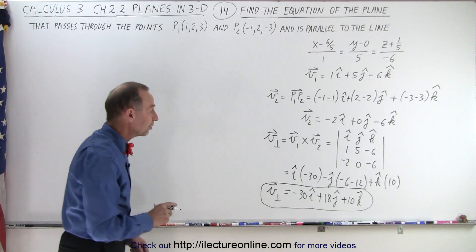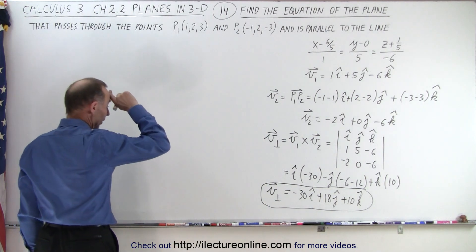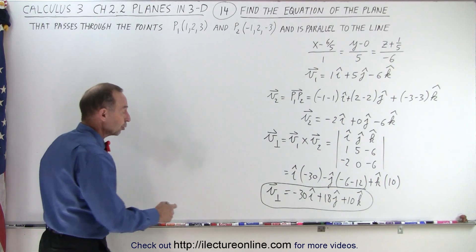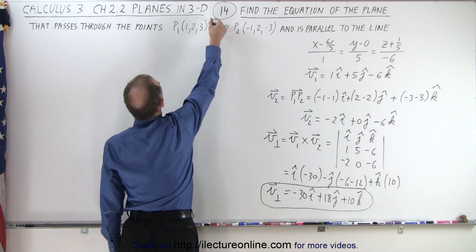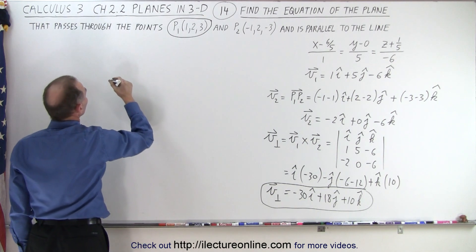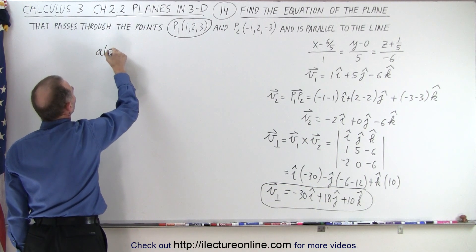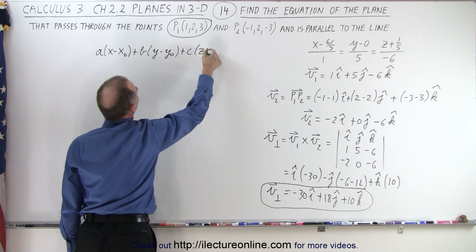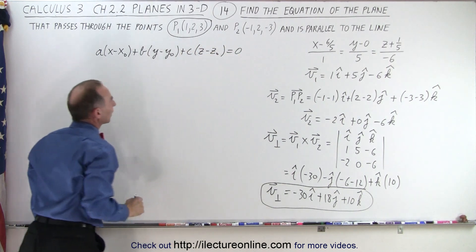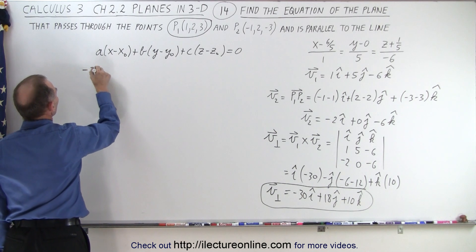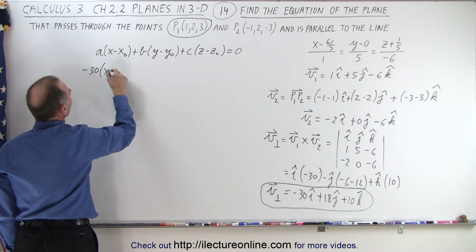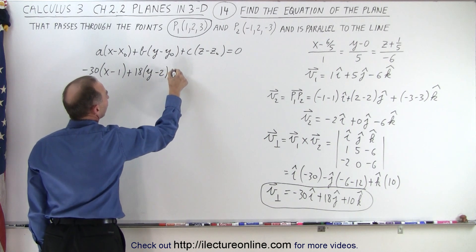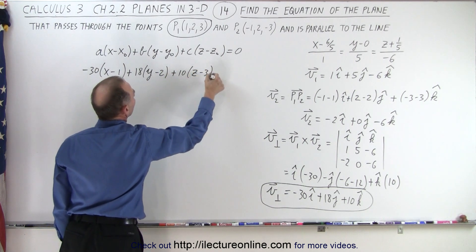How do we find the equation of a plane? We use what we call the point-normal form: we need the normal vector and one point on the plane. The equation looks as follows: a times (x − x₀), plus b times (y − y₀), plus c times (z − z₀), equals 0. Plugging in the values: minus 30 times (x − 1), plus 18 times (y − 2), plus 10 times (z − 3), equals 0.